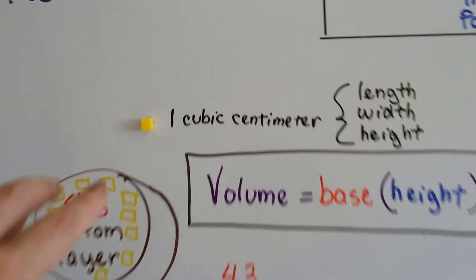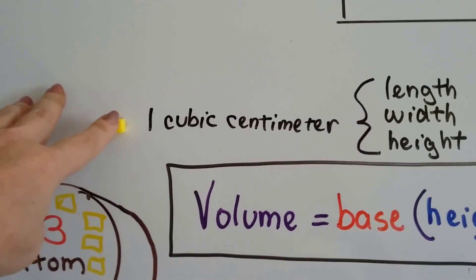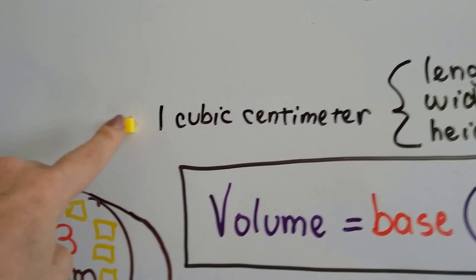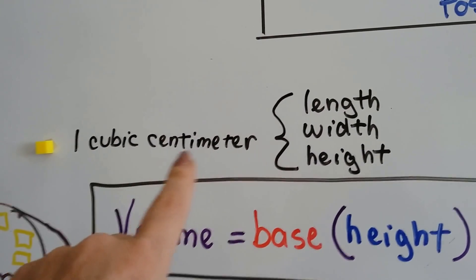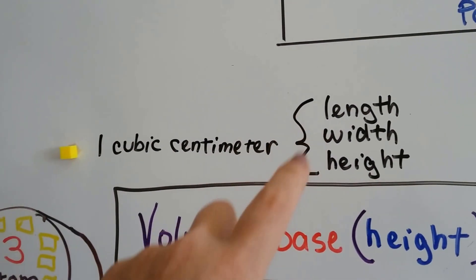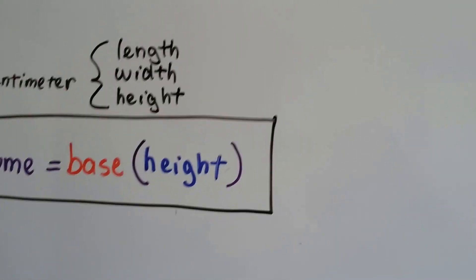So I've got these little yellow one cubic centimeter squares. It's a little cube, and it's one centimeter in length, width, and height. So let me show that to you.